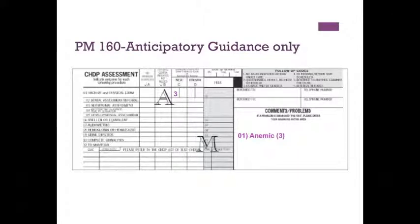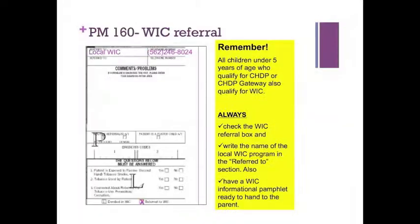For patients who are only receiving anticipatory guidance, there is still a specific way to fill out the PM160. For example, if this patient is anemic, in column C of screening procedure one you will write follow-up code number three, indicating that a diagnosis was made and treatment was started — in this case, the treatment is anticipatory guidance. In the comments or problems section, write screening procedure 01, followed by the diagnosis, anemic, and then follow-up code three. Remember, all children under five years of age who qualify for CHDP or CHDP Gateway also qualify for WIC. Always check the WIC referral box, write the name of the local WIC program in the referred-to section, have a WIC informational pamphlet ready, and be prepared to fill out the WIC referral form.